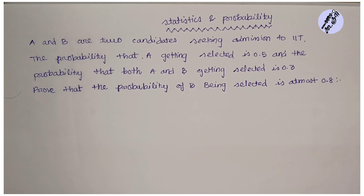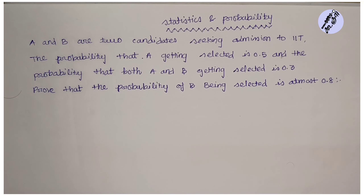In the video, Max's statistics and probability. A and B are two candidates seeking admission to IIT. The probability of A getting selected is 0.5, and the probability of both A and B getting selected is 0.3. Prove that the probability of B being selected is at most 0.8.